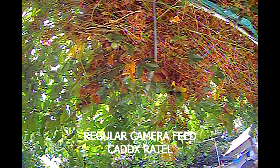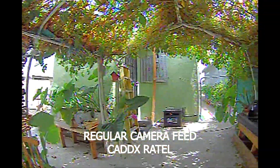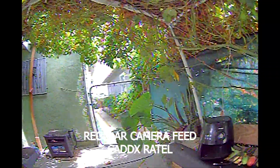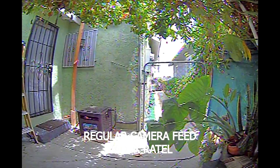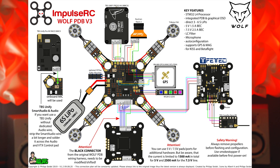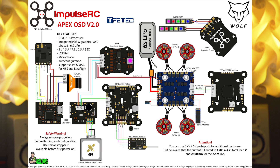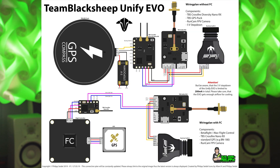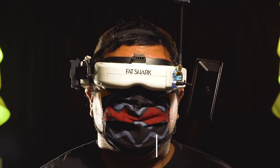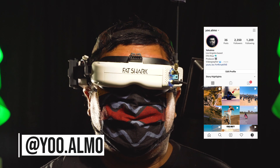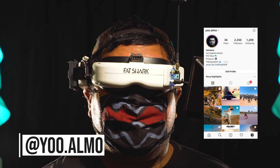I would suggest sticking with the Apex OSD or the Wolf PDB — it was pretty straightforward to set up. Here are some of the wiring diagrams: first is the Wolf PDB, second is the Apex OSD, and last is the TBS Evo. If you guys have any other questions go ahead and leave it in the comments down below, and I'll see you guys in the next one.